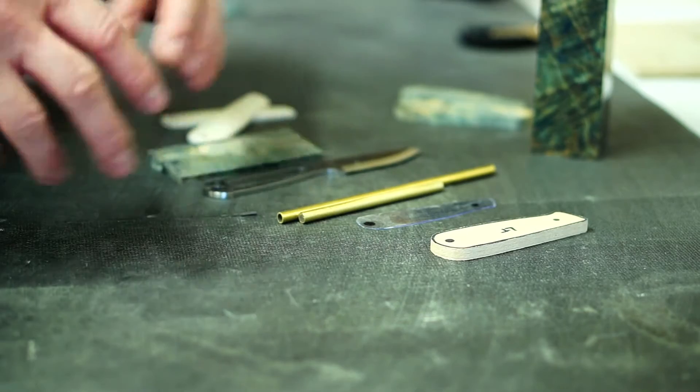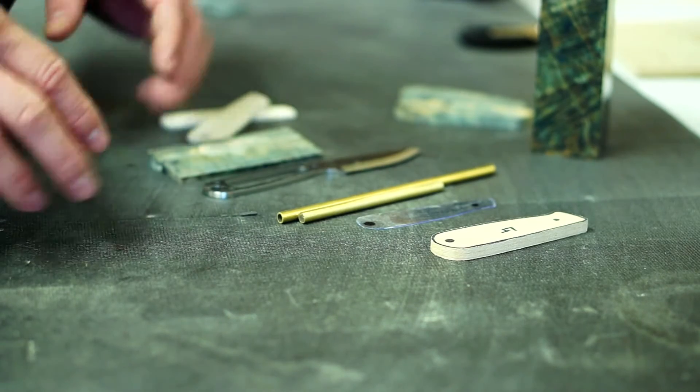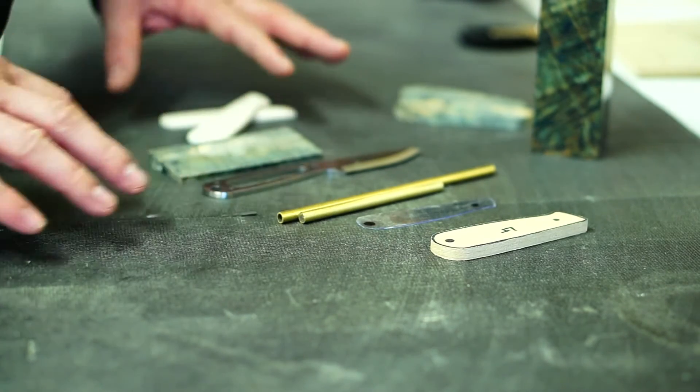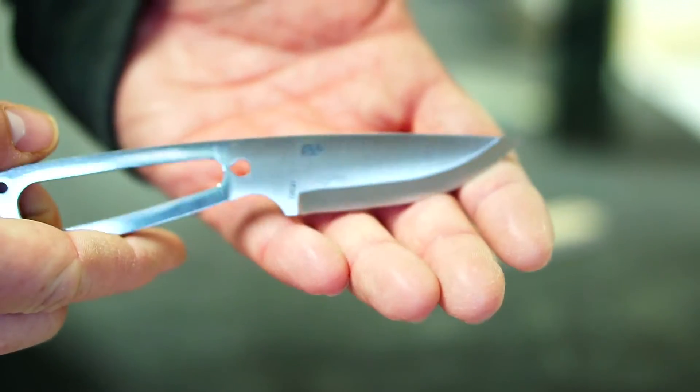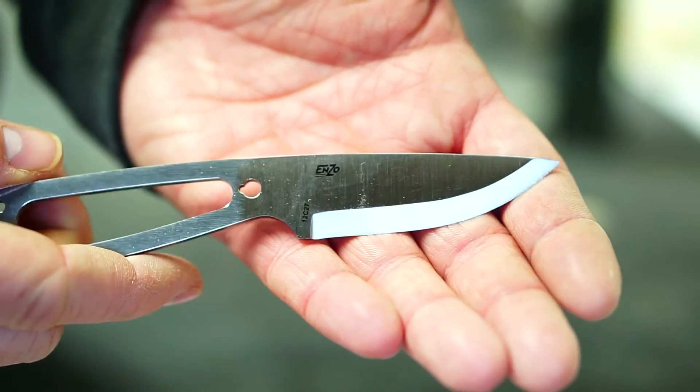So before I get going on showing you how I'm putting this thing together, I wanted to show you a little bit about what I'm working with here. The knife I'm going to be doing in this video is the 12c27 Scandi ground Enzo necker knife.